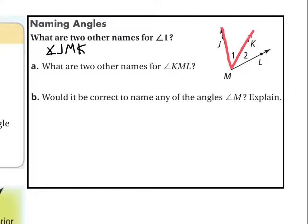What's another way we could name it? You might think angle M, but be careful — is that the only angle M in the diagram? It's the only angle one, but it's not the only angle M, so we can't do that. We could also flip the name around and call it angle K-M-J. Absolutely — those are our two other names.